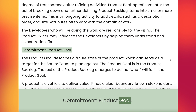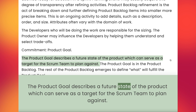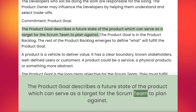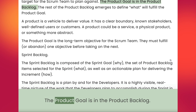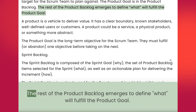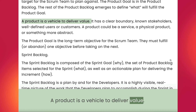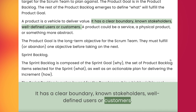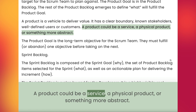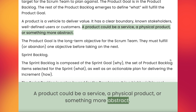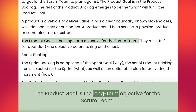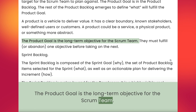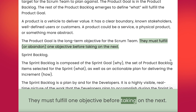Commitment: Product Goal. The product goal describes a future state of the product which can serve as a target for the Scrum team to plan against. The product goal is in the product backlog. The rest of the product backlog emerges to define what will fulfill the product goal. A product is a vehicle to deliver value; it has a clear boundary, known stakeholders, and well-defined users or customers. A product could be a service, a physical product, or something more abstract. The product goal is the long-term objective for the Scrum team. They must fulfill one objective before taking on the next.